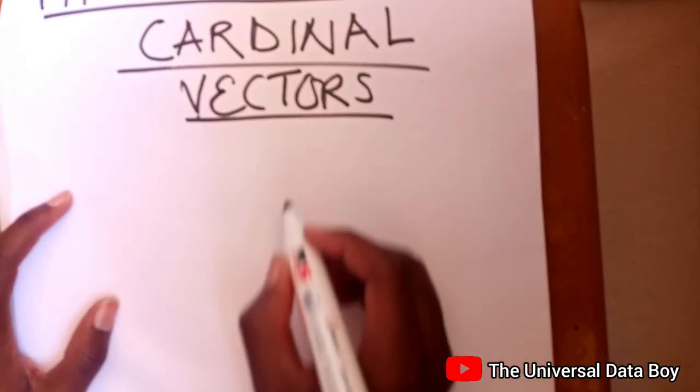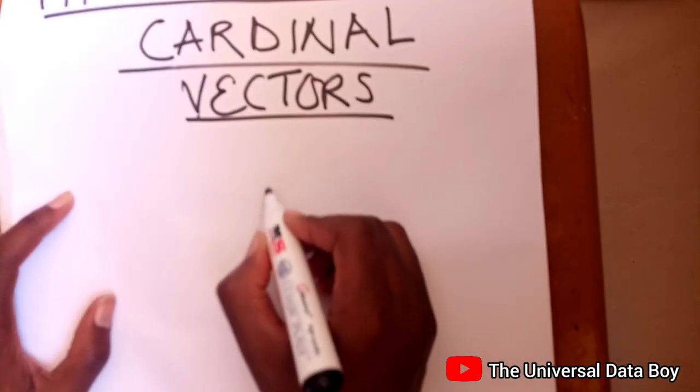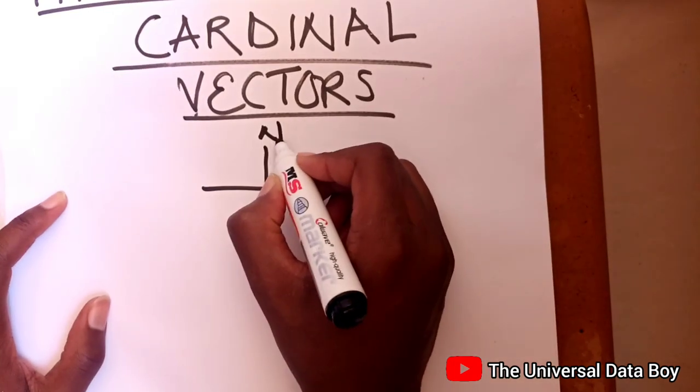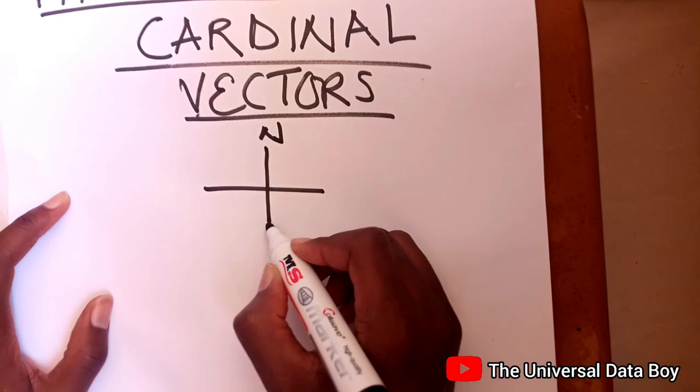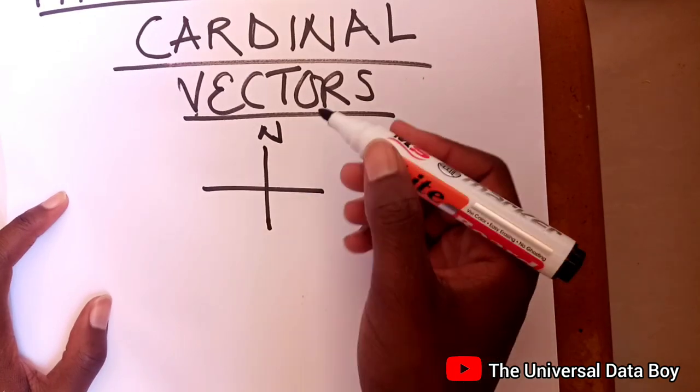So for cardinal vectors, we have got four: north, west, south, and east. So now if you have your compass, we always know north is this side, and south is the opposite of north, like north pole, south pole.